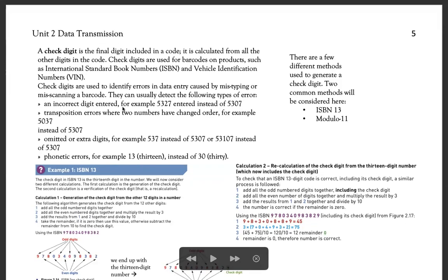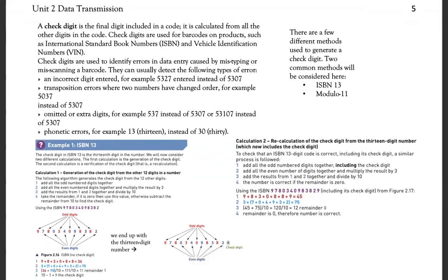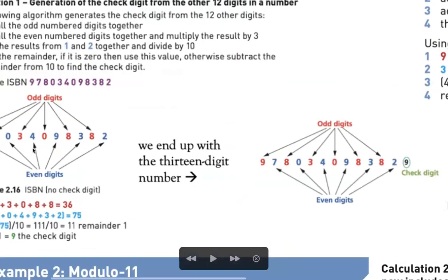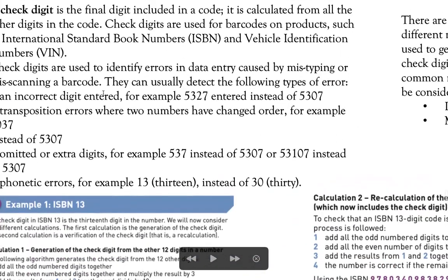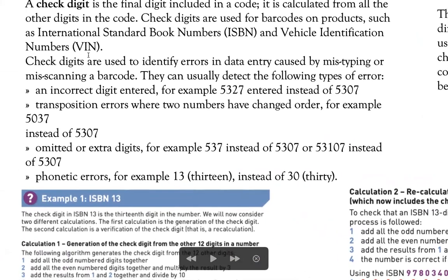Next we'll be talking about the check digit method to identify possible errors. It's actually an error verification method — we'll be talking about error verification versus validation later on. Basically, it can be applied to a sequence of numbers. For example, if I'm using the International Standard Book Number, you can see there's a sequence of numbers written under the barcode. Similarly, we can identify vehicle identification numbers and registration numbers using this method.